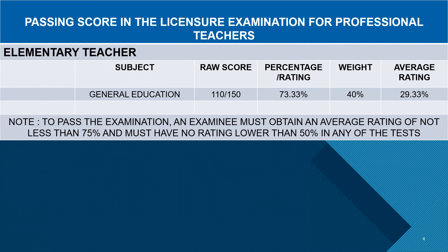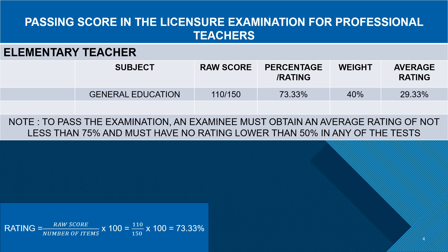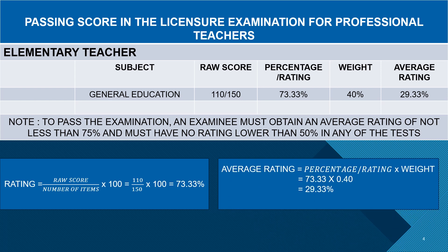To determine the rating in the general education subject, let us say that the examinee obtains a score of 110 out of 150 items. The solution involves dividing the raw score — 110 correct answers — by the total number of items and then multiplying the result by 100. This calculation reveals that the examinee achieved a percentage or rating of approximately 73.33%. To find the average rating for the general education subject, multiply the subject's rating by its weight: 73.33 times 0.40, giving an average rating in general education of 29.33%.